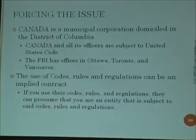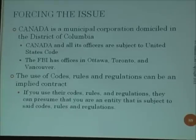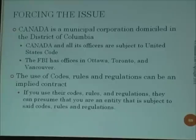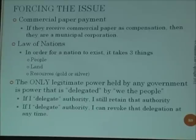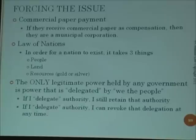One of the things I tell them is that the use of code, rules, and regulations should not be construed to imply that I've agreed to any jurisdiction. Also, if they receive payment in commercial paper, they're a municipal corporation. And one thing I put in my court documents to get out of paying filing fees: there are three requirements for a nation — people, money, and resources. I put on my document that I'm a holder of the office of the people, that I have at least $21 in silver, and that I have absolute title to the land. That makes me a nation.